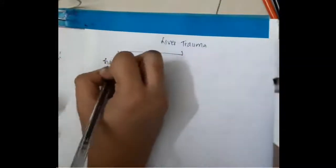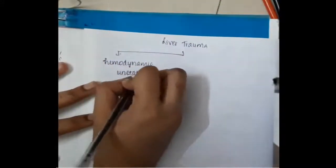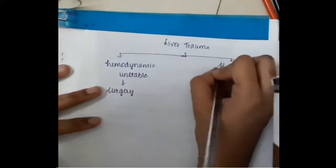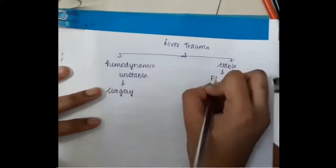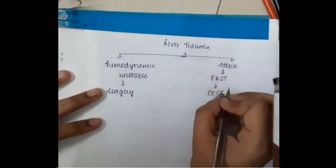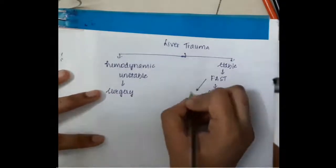The most common symptom of liver trauma is bleeding. Management depends on the hemodynamic stability of the patient. If the patient is hemodynamically unstable, we should directly go for surgery. If the patient is hemodynamically stable, we should do FAST.